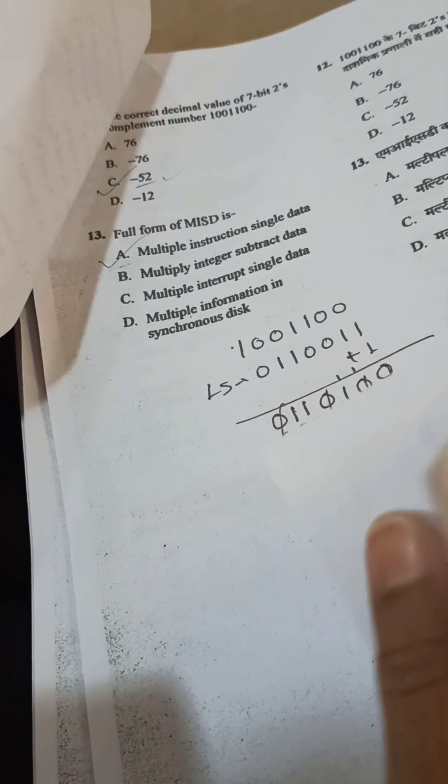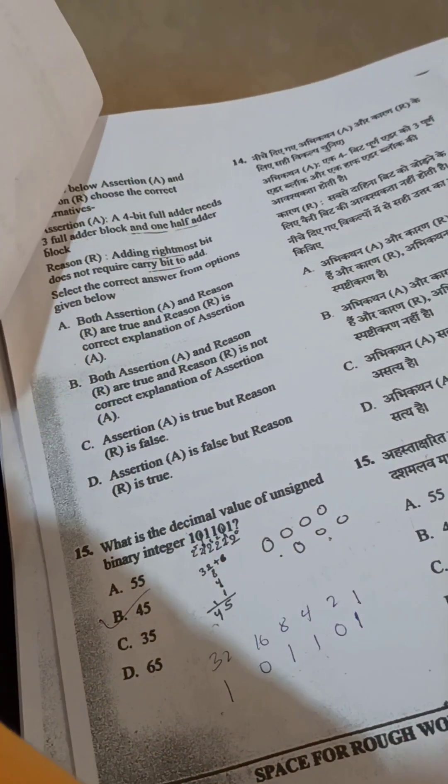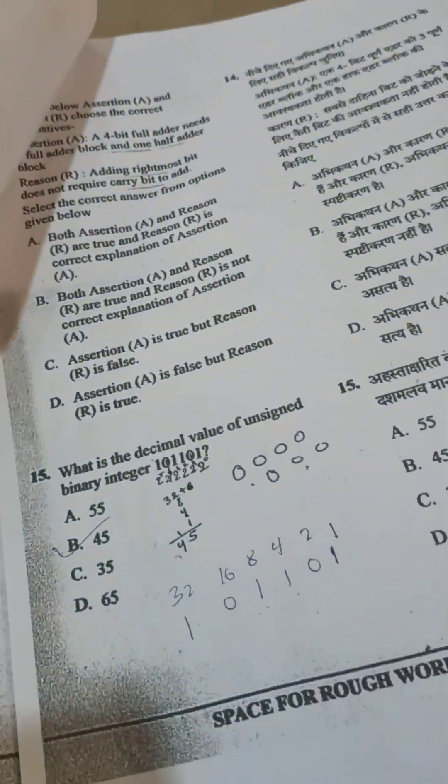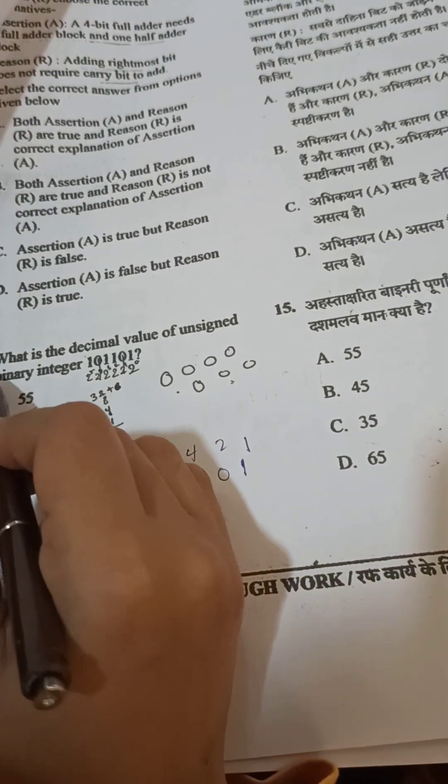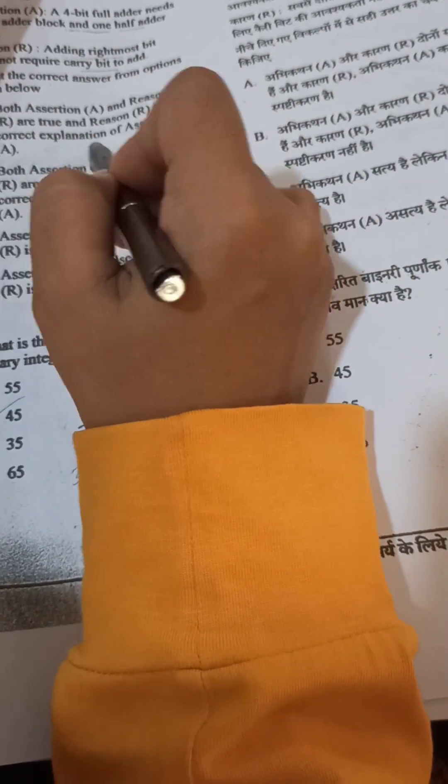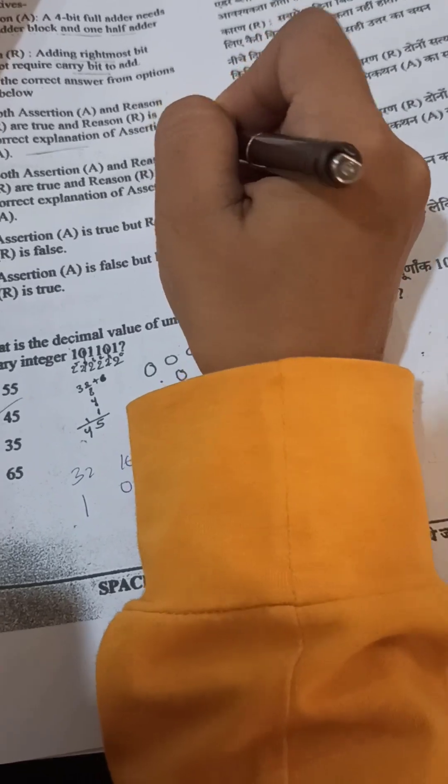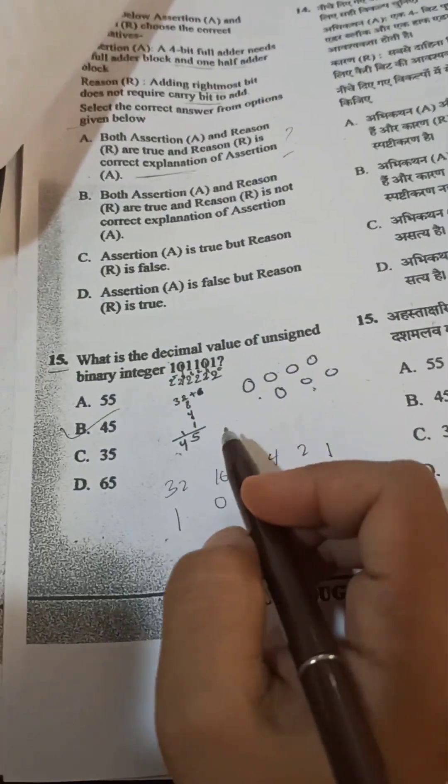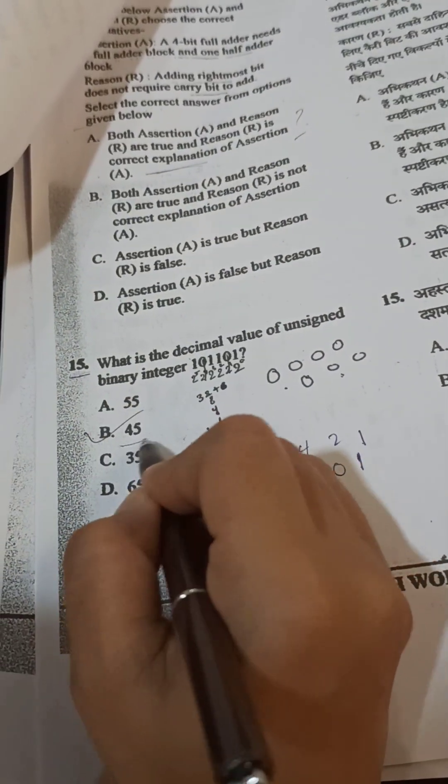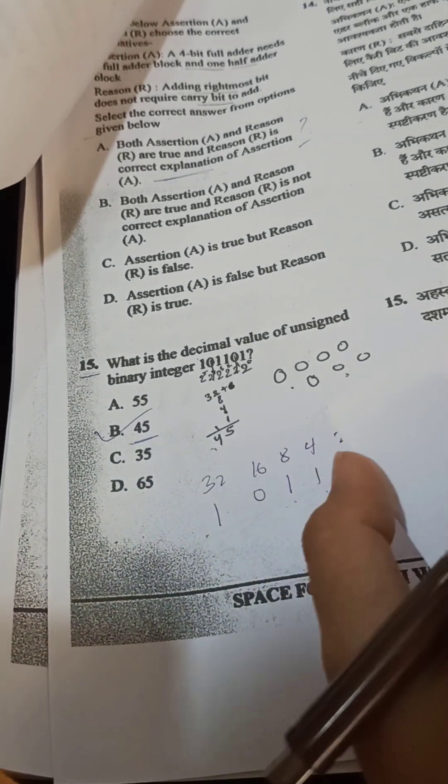Then I will record a video for detail, but so many queries are coming. Here option question number 15. Here I think assertion reason both should be correct and it should be the correct explanation. Little bit doubt I have. I will confirm once. But this one question number 15, 45 is the answer key.